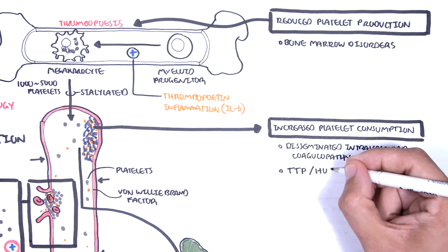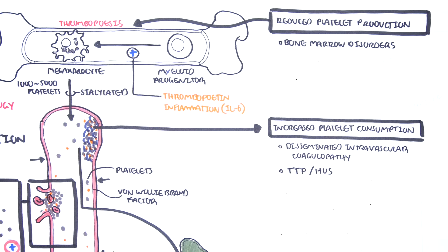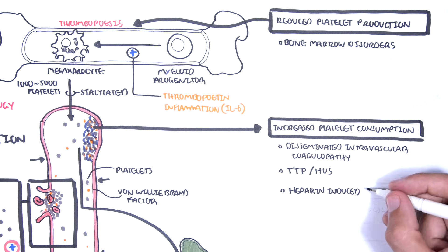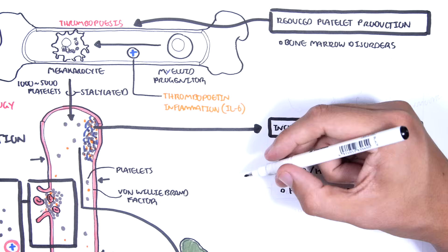This occurs in conditions such as disseminated intravascular coagulopathy, thrombotic microangiopathy, such as thrombotic thrombocytopenic purpura and hemolytic uremic syndrome, which are also important causes of hemolytic anemia. Another cause of platelet consumption is heparin-induced thrombocytopenia.